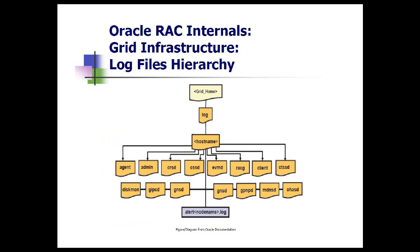You can see in the OCCD log file whether eviction was due to the network heartbeat or disk heartbeat, and how many seconds until the node was evicted. You can also refer to the CRSD log, which registers resource auto start-up information. If you have any problems starting your services automatically, you can check there. There is also a client directory which generates log files whenever you run commands like OCR check, OCR config, or OCR dump.